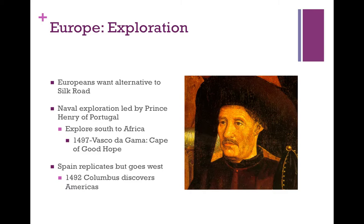They want to get a piece of the trade routes — the Indian Ocean trade and the Silk Road. They don't want to go through the Venetians and the Persians and the Ottomans to get their goods. Instead, they want to go get them themselves, which will save them money and bring in more money at the same time. Why go these land routes through these middlemen? Why not just go sailing on their own?